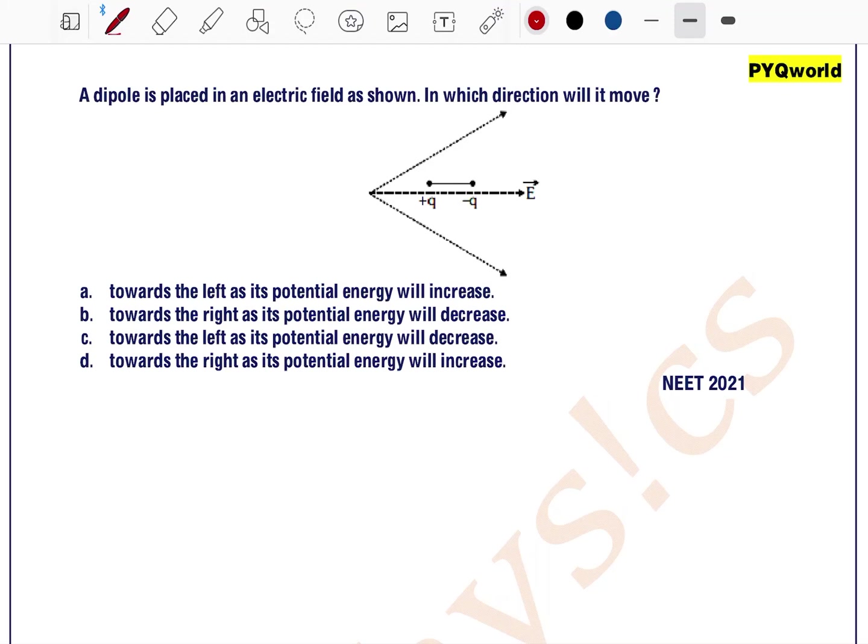A dipole is placed in an electric field as shown. In which direction will it move? The electric field is shown by dotted lines here. The electric field is non-uniform and it is a radial electric field.